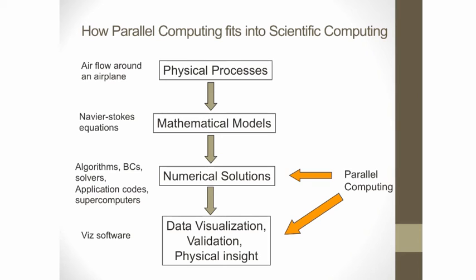How do you actually go about using parallel computing in scientific computing? You start with some physical processes — for instance, studying the air flow around an airplane. Then you build mathematical models to do the simulation, such as modeling it using the Navier-Stokes equations. Solving these involves various numerical solutions, lots of algorithms and solvers, which is very compute intensive. Scientists and engineers want to do it at very high resolution with lots of grid points. Once the output is produced, you visualize the data, validate it, figure out the physical insights, and may go back to modify your models. The numerical solution and visualization are the parts that heavily use parallel computation.